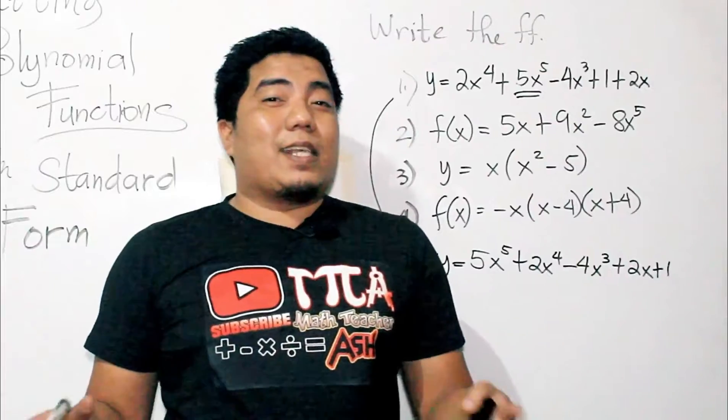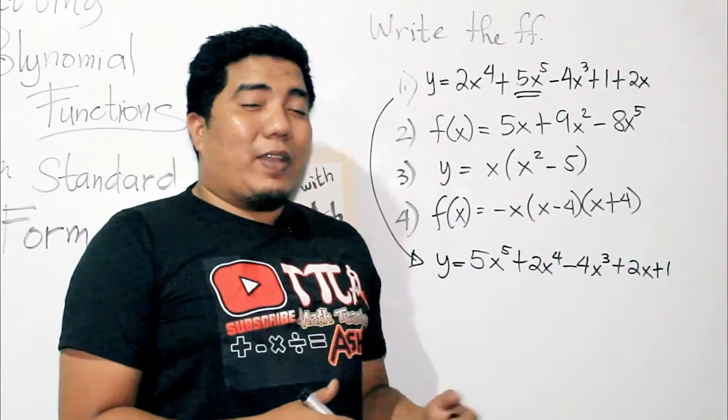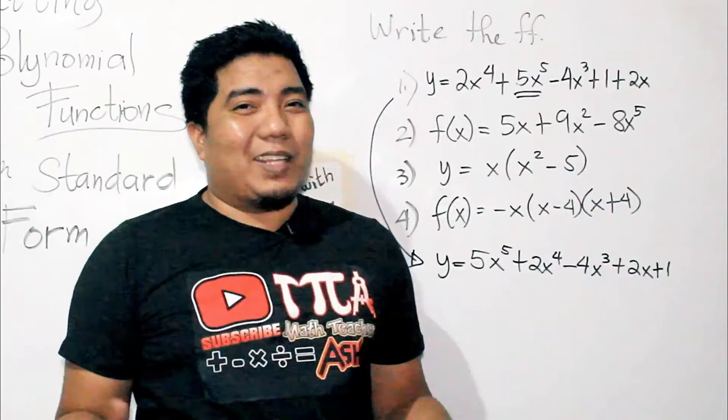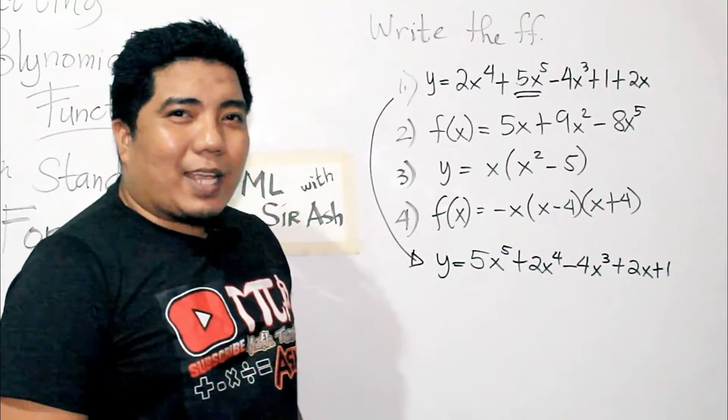And then the constant term that is positive 1. So, basically, this is just how to write this given example in the standard form. Easy, right? Now, let's go to the second example.